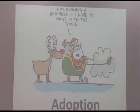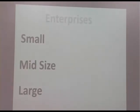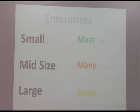Looking at adoption by enterprise size: small companies put most things on the cloud, mid-size companies put many but not all things, and large companies put very small things on the cloud. Large companies ensure they have both public and private elements, putting computational workloads on the public cloud while keeping sensitive data on-premises.